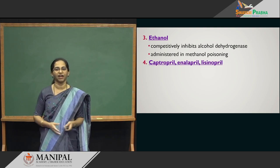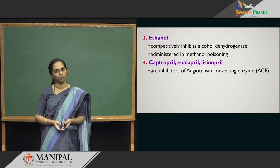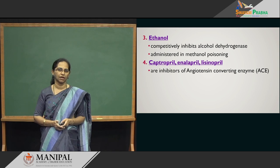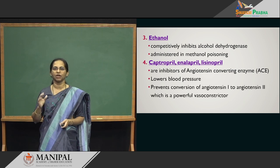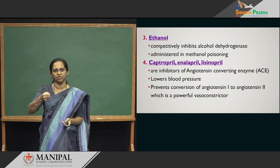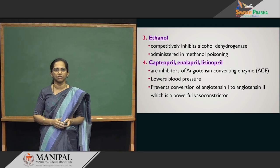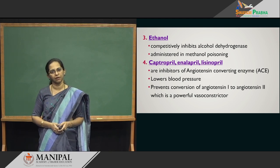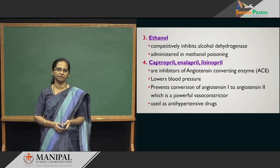For anti-hypertensive treatment, drugs like captopril, enalapril, or lisinopril are used — all are ACE inhibitors, angiotensin converting enzyme inhibitors. By blocking ACE, you bring down the level of angiotensin 2, which is a powerful vasoconstrictor that increases blood pressure. By not producing angiotensin 2, you bring down the blood pressure of the patient.